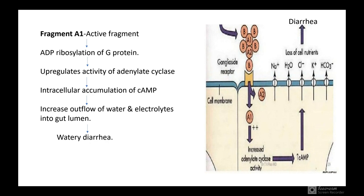The mechanism of action of the heat labile toxin is quite similar to that of cholera toxin. Fragment A1 is the active fragment. It causes ADP-ribosylation of G protein, which upregulates the activity of adenylate cyclase, causing intracellular accumulation of cyclic AMP. This causes increased outflow of water and electrolytes into the gut lumen, resulting in watery diarrhea.